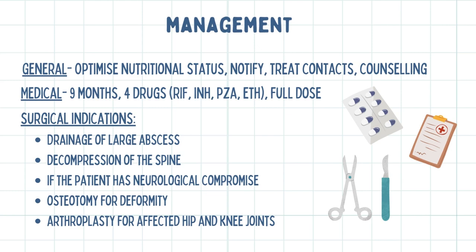Managing these patients involves different approaches. For general management, optimize the nutritional status of the patient, notify the disease, trace contacts, and counsel the patient. Medical management involves TB therapy for nine months with four TB drugs at full dose, extending the duration if necessary. Immobilize and splint the affected joints. Surgical indications include drainage of large abscesses, decompression of the spine if the patient has neurological compromise, osteotomy for deformity, and arthroplasty for affected hip and knee joints. Rehabilitation with physiotherapy will be required for these patients.